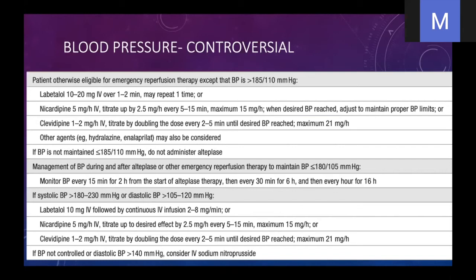Blood pressure is highly controversial. If the patient is going to be getting thrombolytics, based on the NINDS trial you really have to get the blood pressure below 185 over 110. The medications most often administered are labetalol, a beta blocker, or nicardipine, a calcium channel blocker. If the patient is not a candidate for thrombolytics, you may want to allow that increased permissive hypertension — because if you're reducing the force in that narrowed hose, you might make the stroke even worse as less blood will get through that area of narrowing.